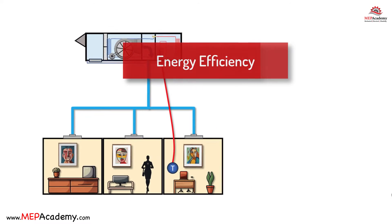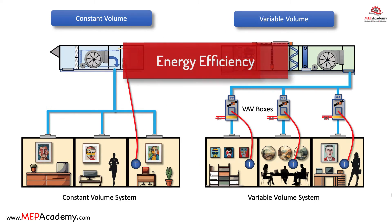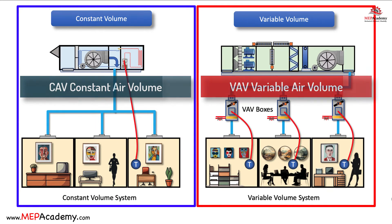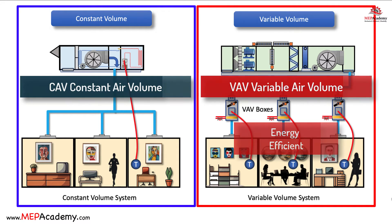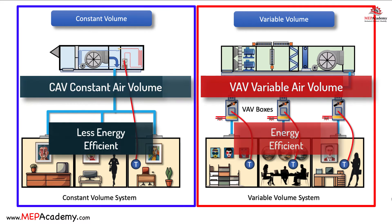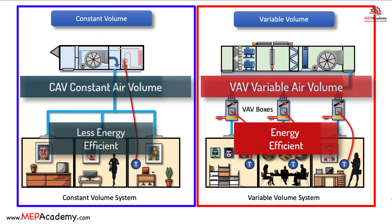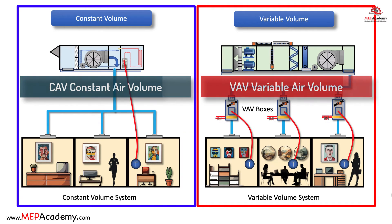Energy Efficiency. Zoning in VAV systems contributes to energy efficiency by delivering conditioned air precisely where and when it's needed, reducing unnecessary heating and cooling. Constant volume systems maintain a consistent airflow even when zones require less heating or cooling, and this inefficiency can lead to higher energy consumption and cost.